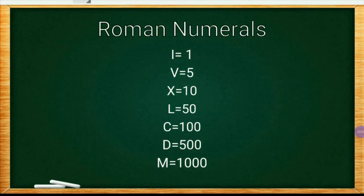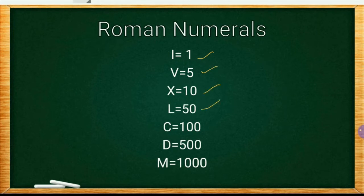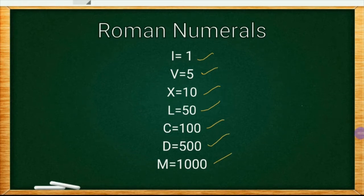Let's learn the seven Roman numerals. I is denoted as 1, V as 5, X as 10, L as 50, C as 100, D as 500, and M as 1000.